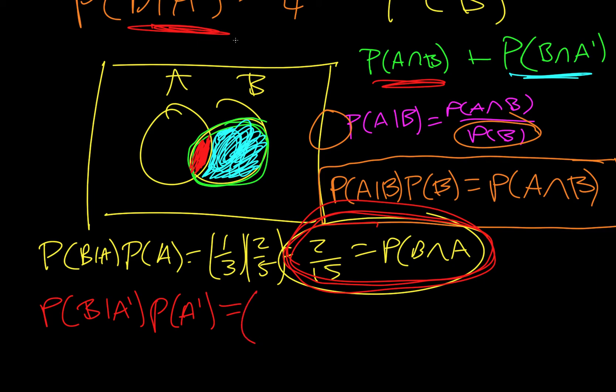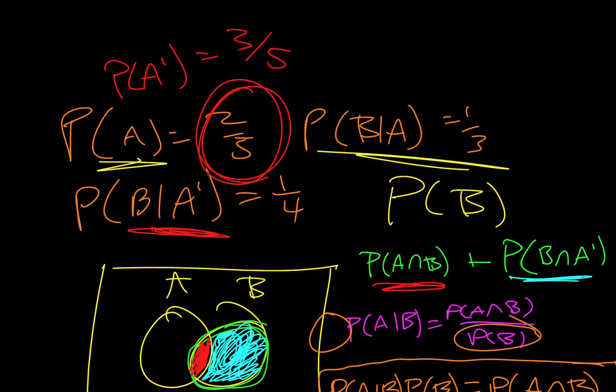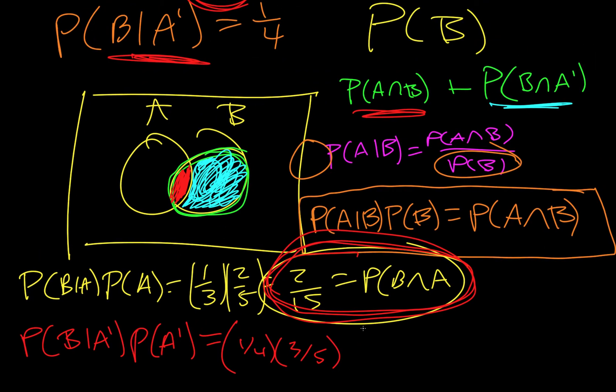And so if we plug those in, we found by two fourths and it's just one fourth, we could go over all the thing three fifths. Okay we multiply that out, it's three twentieths. And that is representing the blue part.